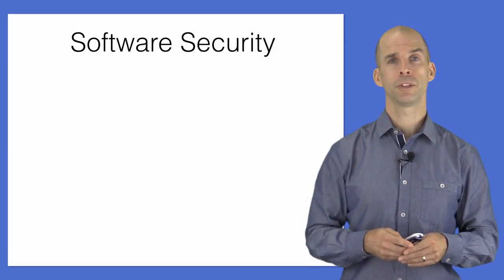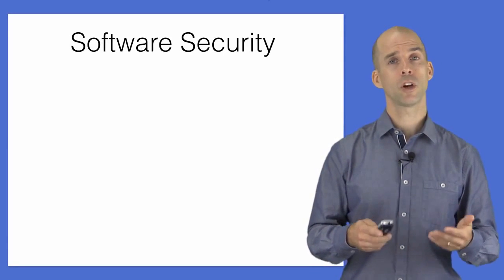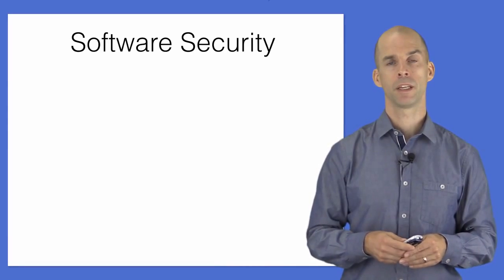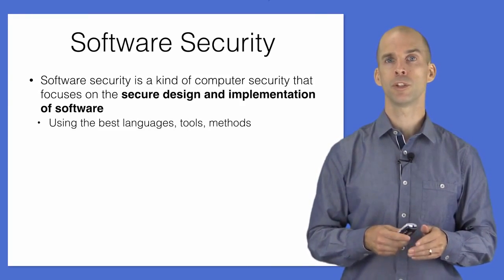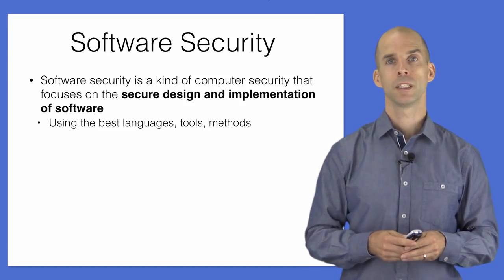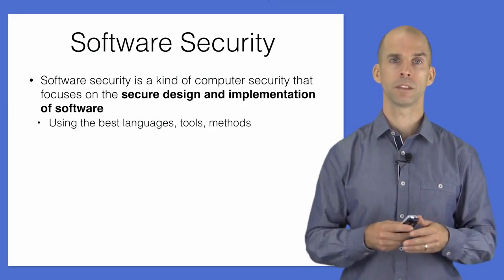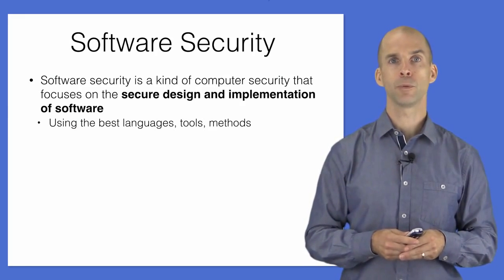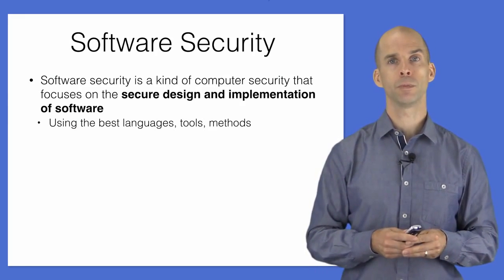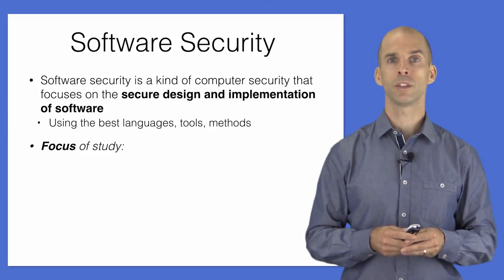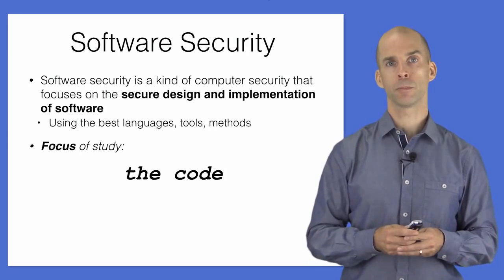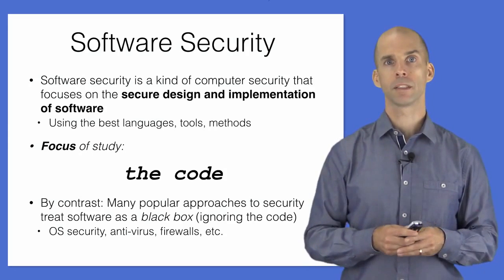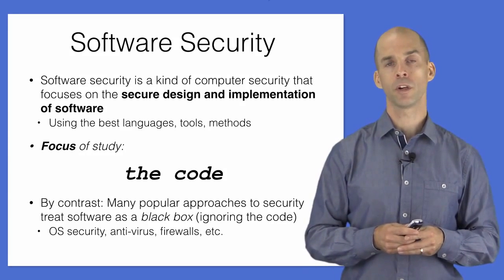Software security is a branch of computer security that focuses on the secure design and implementation of software — avoiding software vulnerabilities, flaws, and bugs. While software security overlaps with and complements other areas of computer security, it is distinguished by its focus on a secure system's code. This focus makes it a white box approach, where other approaches are more black box — they tend to ignore the software's internals.